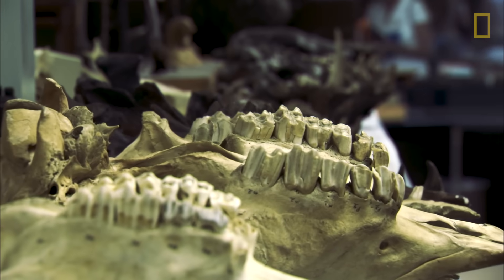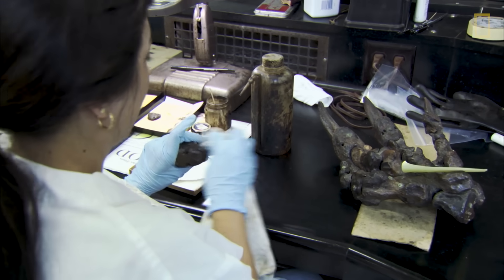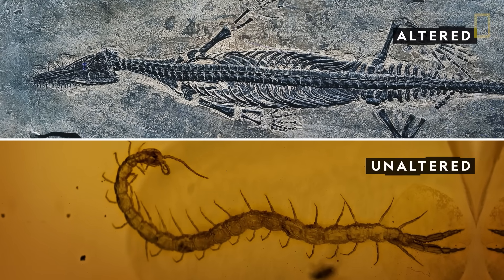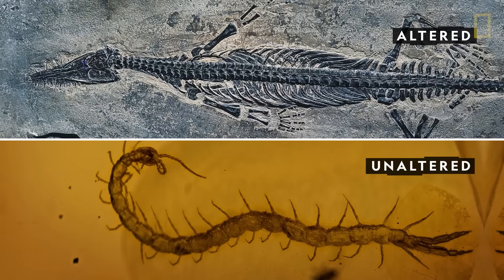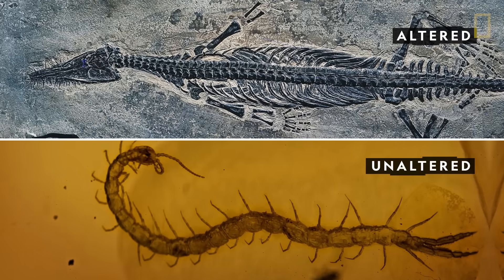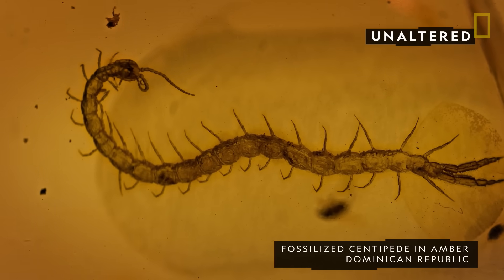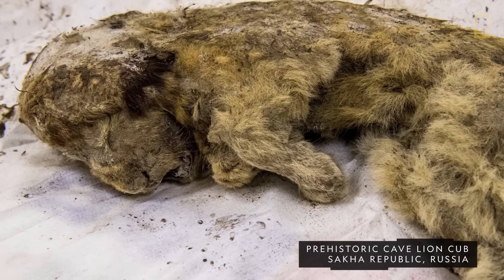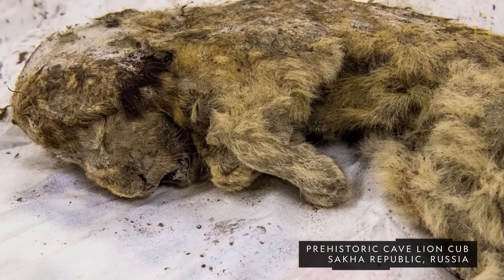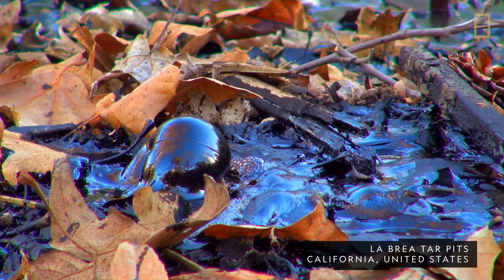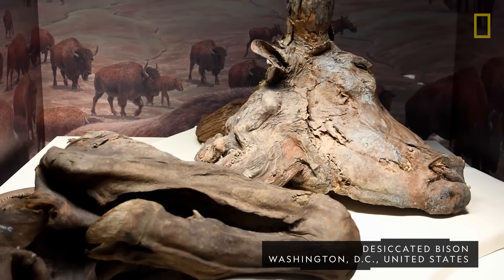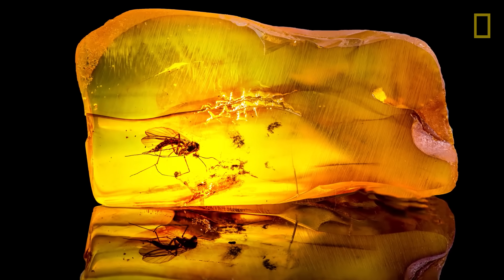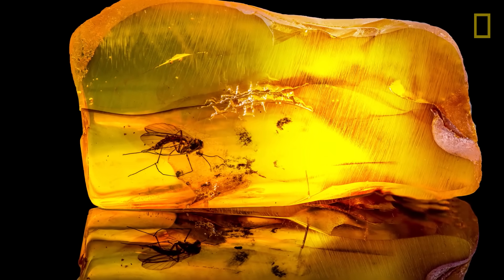Fossilization, or the process of preserving organisms in stone, can occur in countless ways. These methods are largely grouped depending on whether the organisms are altered during the fossilization process. Fossilization that does not alter a specimen can help to preserve its original form and texture. Among many methods, this group includes organisms that have been frozen, preserved in tar pits, and mummified. One special case involves trapping organisms, oftentimes insects, in amber.